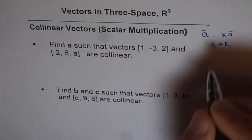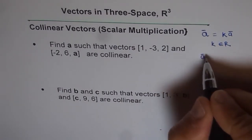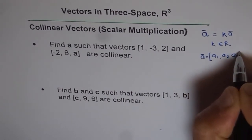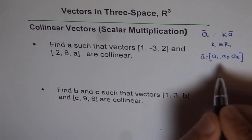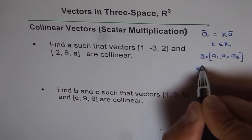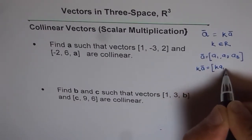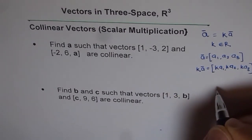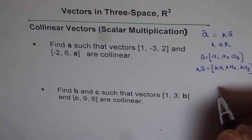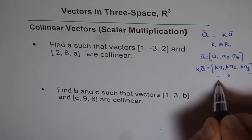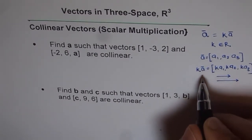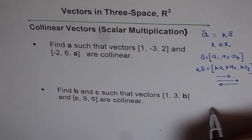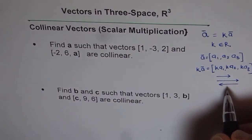If I have a vector a defined with components a1, a2, and a3, then any collinear vector with a will be k times a, which equals k*a1, k*a2, k*a3. These two vectors will always be collinear. If k is positive, both vectors a and k*a will be in the same direction, but if k is negative, they will be in the opposite direction. In either case, they fall on the same line and therefore we say they are collinear.